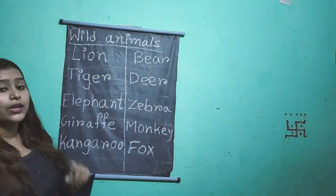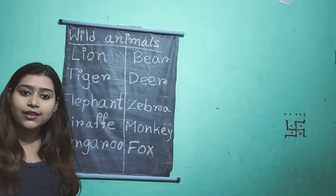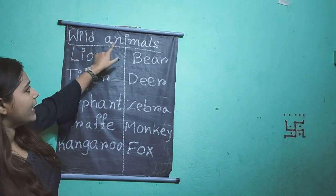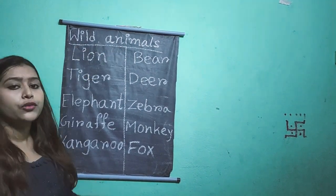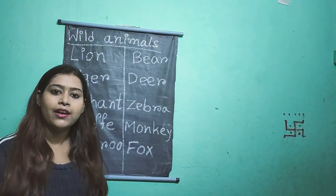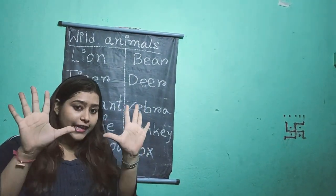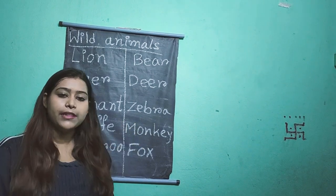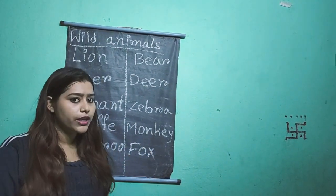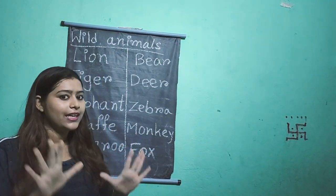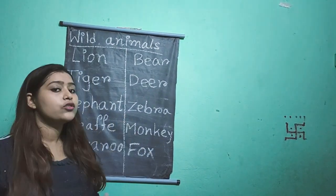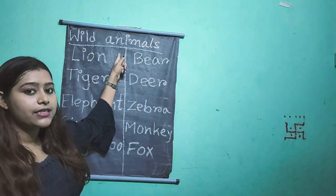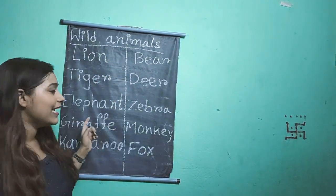So the animals who live in jungle or forest, we call them as wild animals. Today we will learn the names of 10 wild animals. There are many wild animals but today we will learn 10. So what are the names of the wild animals? Come, let's read.